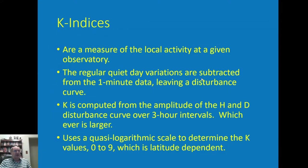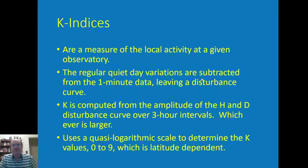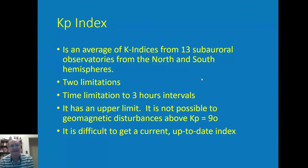What might be a K of five in Boulder — representing about 150 nanoteslas — at College that same K value would correspond to 500 nanoteslas. That's why you have to be careful using K indices and know where they're being measured, because what you get at one observatory may or may not correspond to what you get at another.